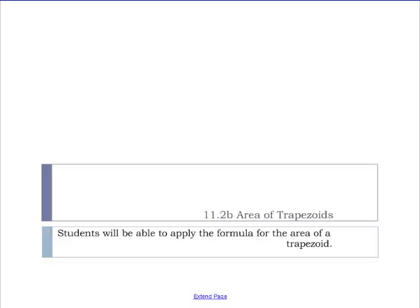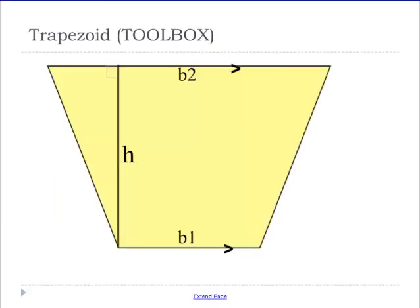For area of a trapezoid, it's a little bit different than everything else, and let's look at one and see why. The difference is, I've got two bases, so I don't know which one to use. I want to just do base times height, but I can't.